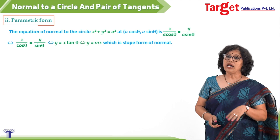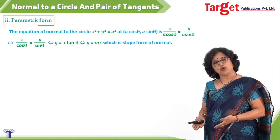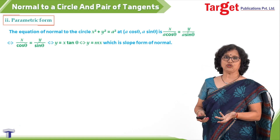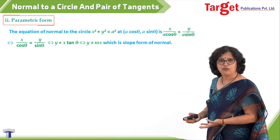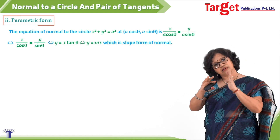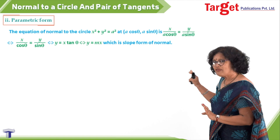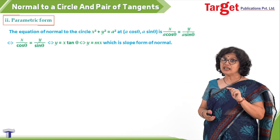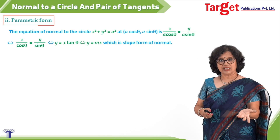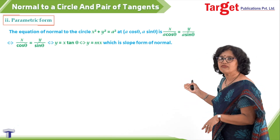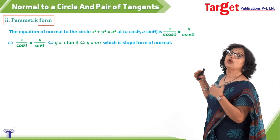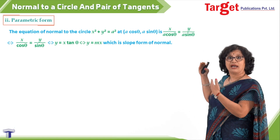Simplifying further gives y = x tanθ. You can replace tanθ by m and remember the line as y = mx, which is also the slope form. Whether you call it slope form or point form, the equation is always y = mx. This is because the center is the origin and the normal passes through the origin, so the form is always y = mx.